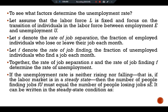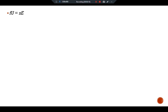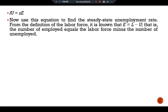If the unemployment rate is neither rising nor falling — that is, if the labor market is in a steady state — then the number of people finding jobs, F×U, must equal the number of people losing jobs, S×E. This steady-state condition is written as F×U = S×E. Using this equation, and knowing that E = L − U, we can find the steady-state unemployment rate.